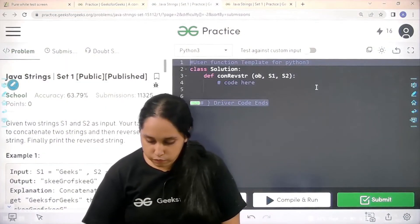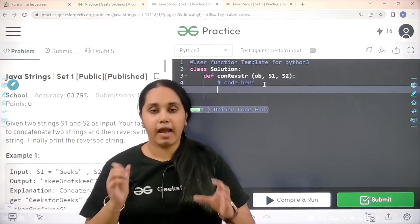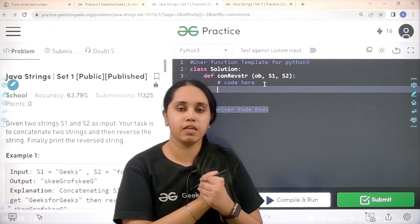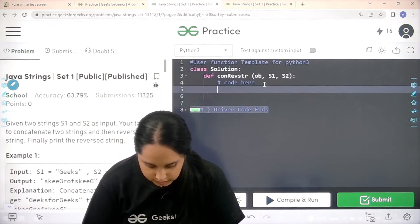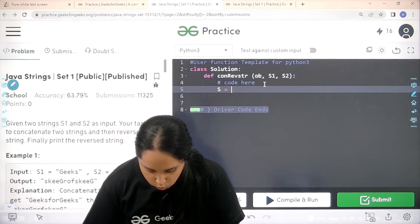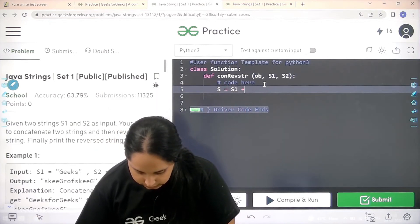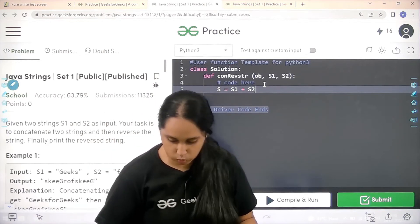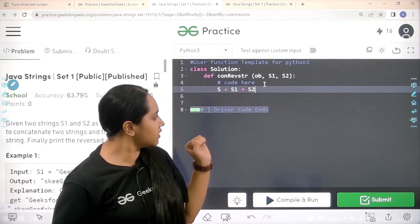Now the first thing that I need to do is, I need to concatenate the strings and store them in a new string. So I would just say S. S is the name of the new string. That is equal to S1 plus S2. So the concatenation has happened.